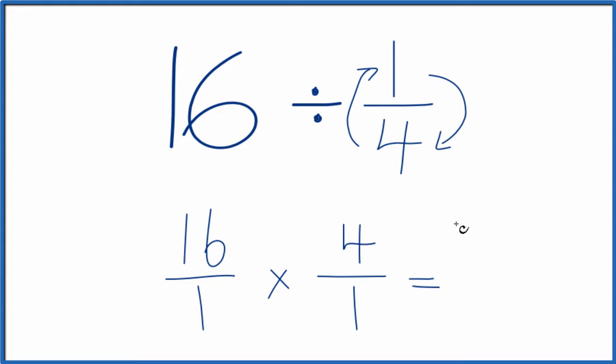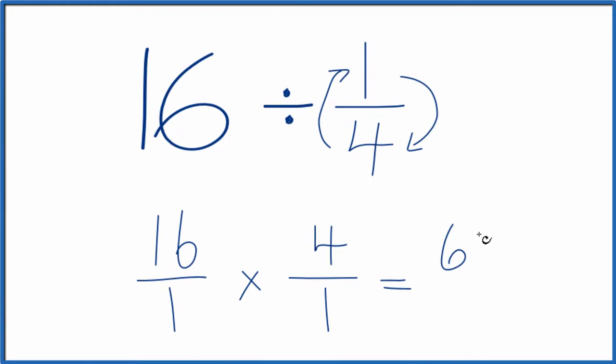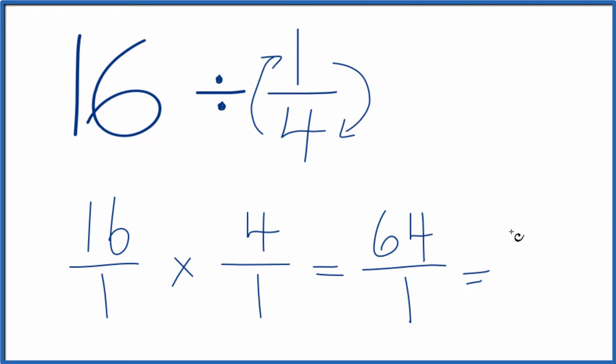16 times 4 is 64. And 1 times 1, that's just 1. And 64 over 1, it's just 64. If you divide 64 by 1, you get 64.